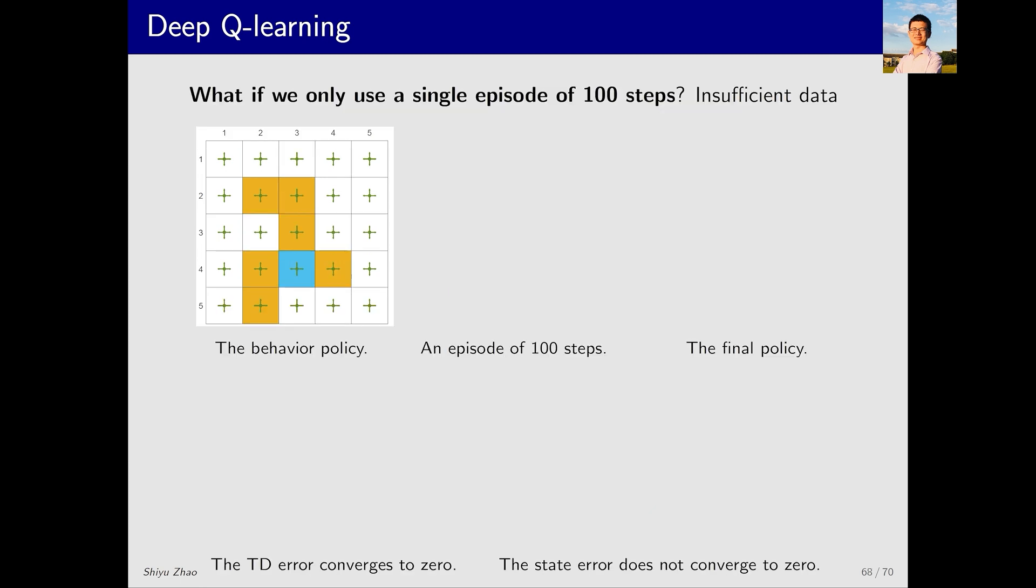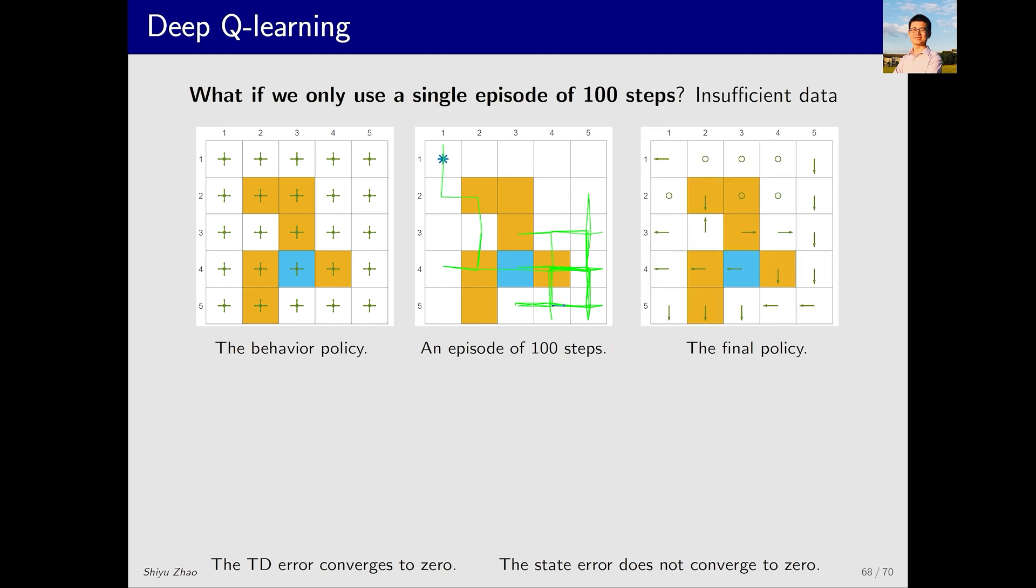Now let's look at another example. This time we deliberately challenge deep Q-learning with less data. Earlier we saw that 1,000 samples were sufficient. Now let's see if 100 samples can still yield satisfactory results. With deep Q-learning using the same behavior policy, if we only run 100 steps, this is the trajectory we get. You can see that this trajectory is far from ideal because many state-action pairs are not visited. It is not surprising that training with such data results in a poor policy.